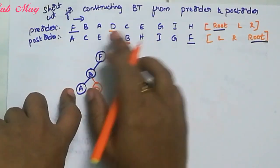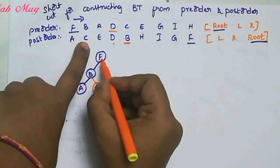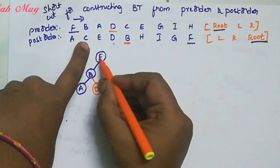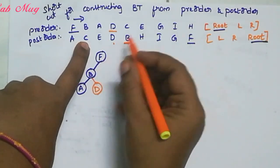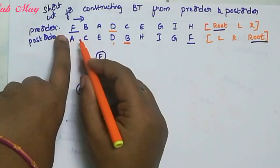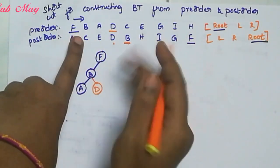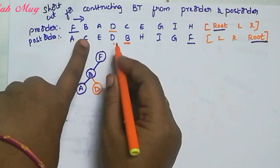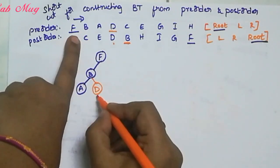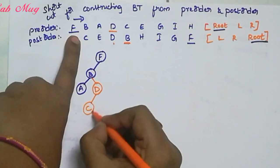Next element is C. Where is C? First root element is F - F ki left side undhi. Then B - B ki left side undhi. Then A - A is on the right side, so A is the root element. Moving to D - D is on the left side. So C is the right place of D, which means C is allotted to the left side of D's subtree.